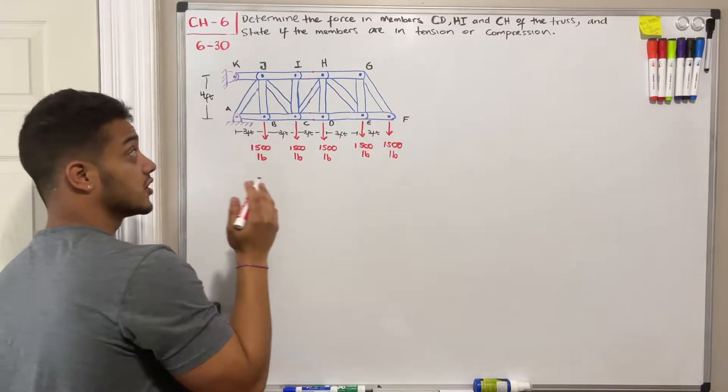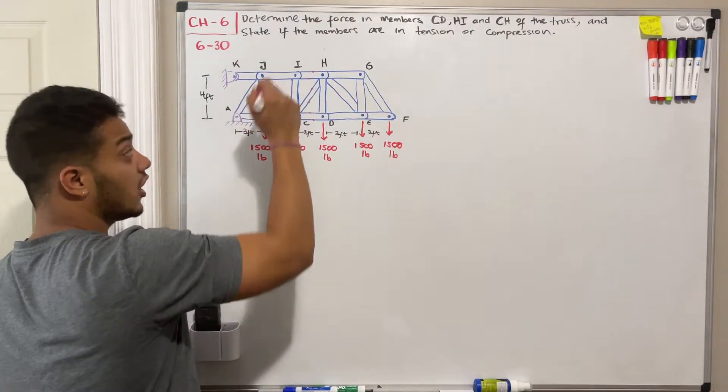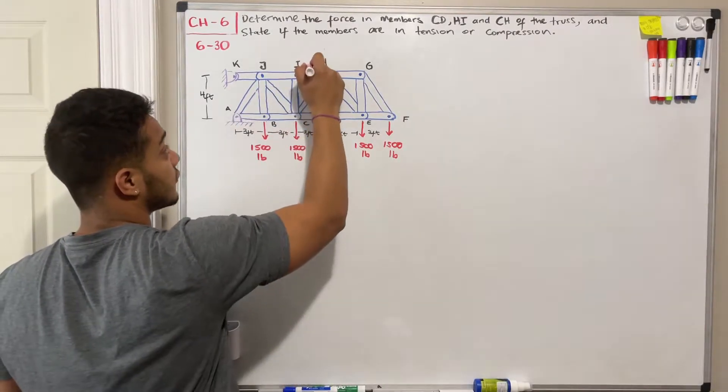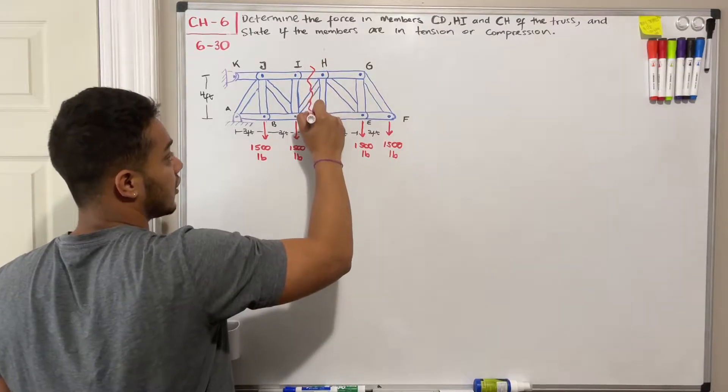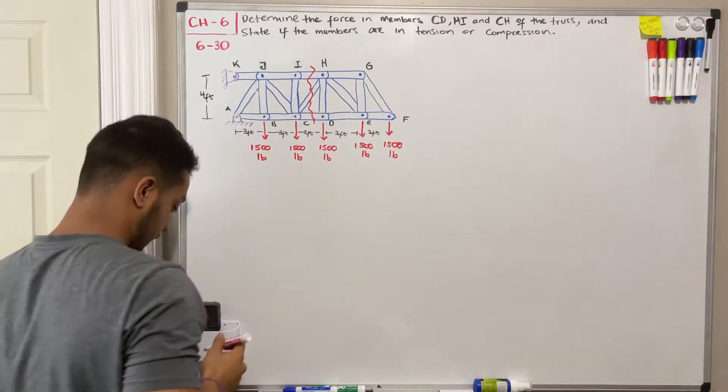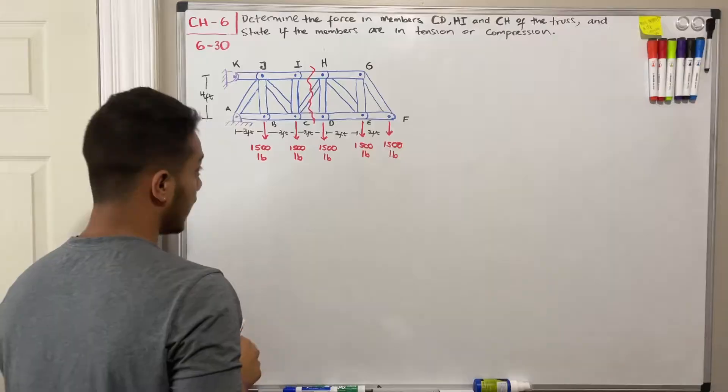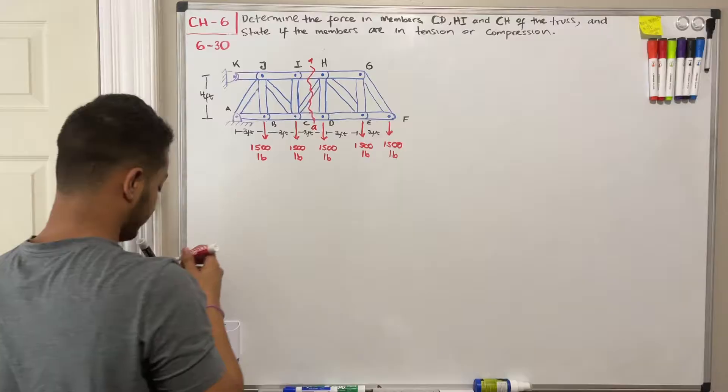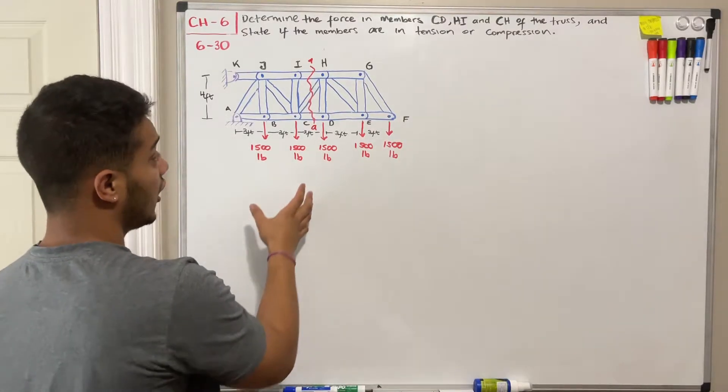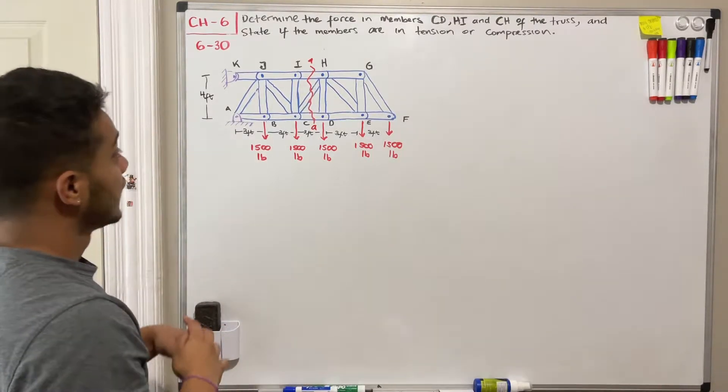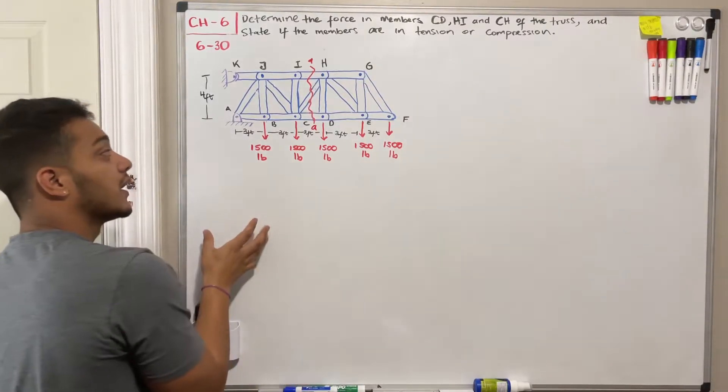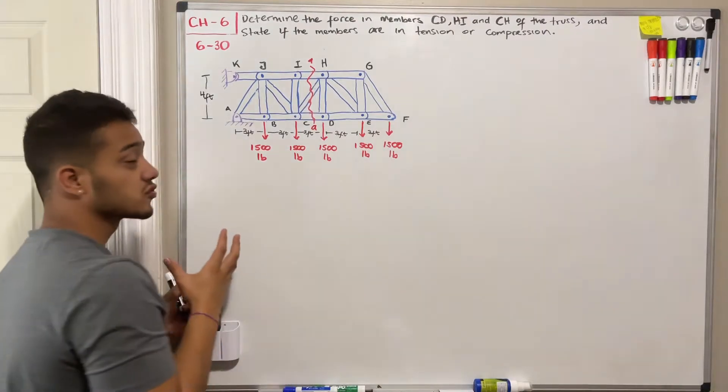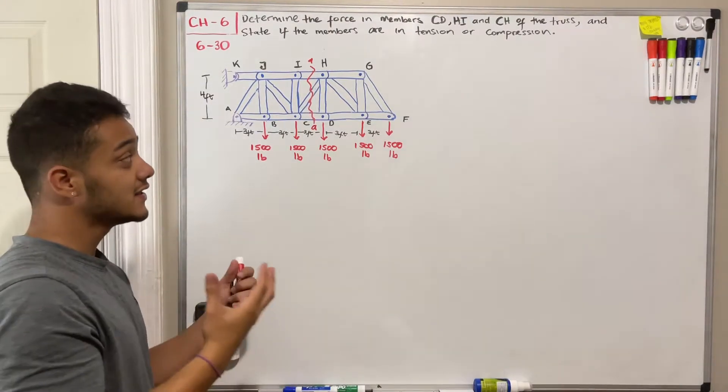So what the method of sections is, is that we're going to take a cut in our truss in order to figure out these forces, these member forces. I'm going to cut over here and I'm going to call it section 8A. So let's start with section 8A. And after we do our cut, we need to say, hey, which side of this truss do I want to pick? So this is a key part of solving these problems, because we want to make our life as easy as we can.